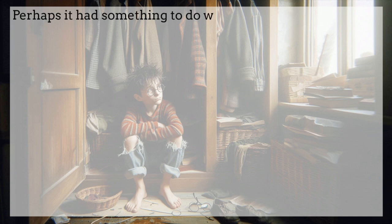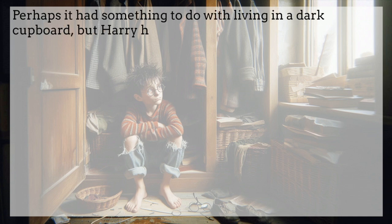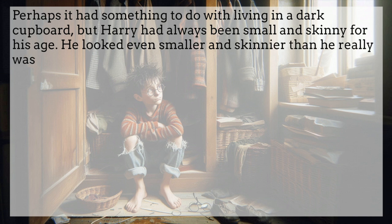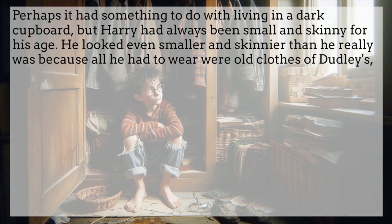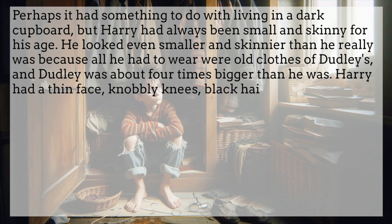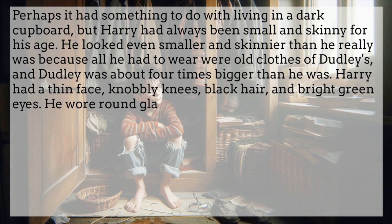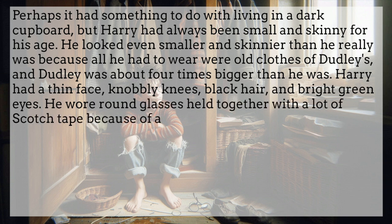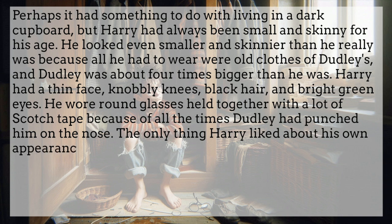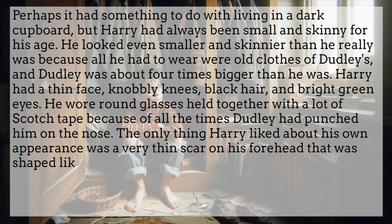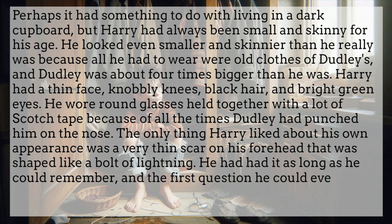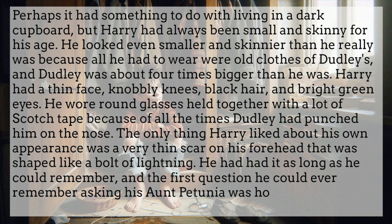Perhaps it had something to do with living in a dark cupboard, but Harry had always been small and skinny for his age. He looked even smaller and skinnier than he really was because all he had to wear were old clothes of Dudley's, and Dudley was about four times bigger than he was. Harry had a thin face, knobbly knees, black hair and bright green eyes. He wore round glasses held together with a lot of scotch tape, because of all the times Dudley had punched him on the nose. The only thing Harry liked about his own appearance was a very thin scar on his forehead that was shaped like a bolt of lightning. He had had it as long as he could remember, and the first question he could ever remember asking his Aunt Petunia was how he had gotten it.